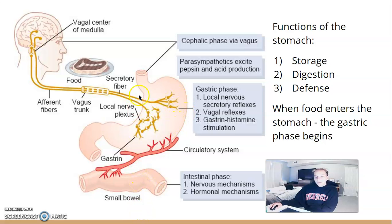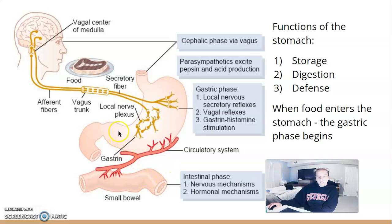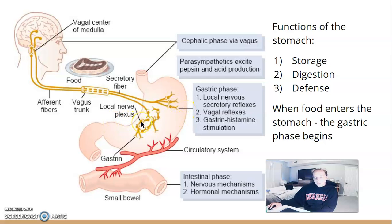The gastric phase is all in the stomach and has three different functions. First, the stomach serves as a storage place, because food can only run through the intestines so fast. While waiting, food sits in the stomach. The stomach also digests food — its acidity is very high and pH is very low — breaking down polypeptides, carbohydrates, and different things like that.